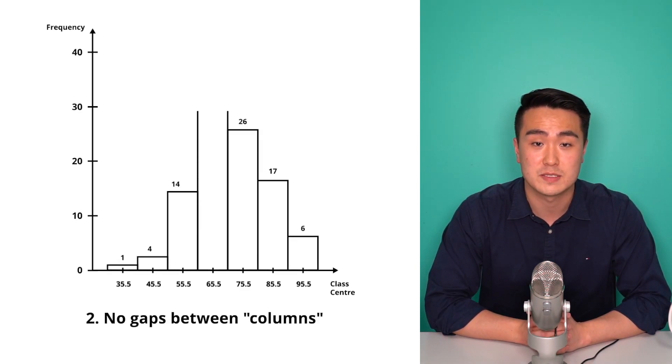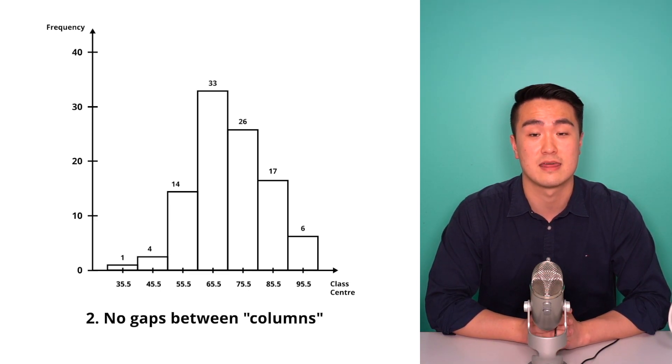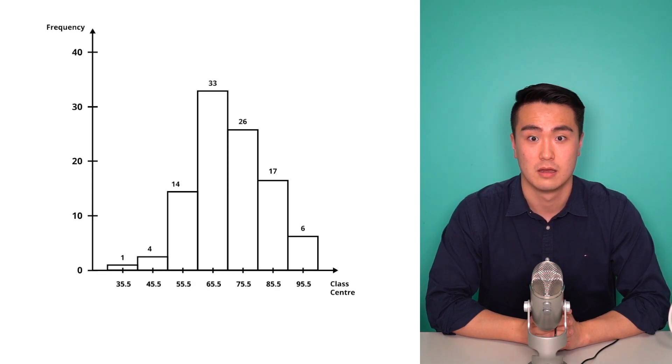Secondly, there are no gaps between each column of the histogram. This is because the histogram represents numerical data and the area under the histogram actually means something.